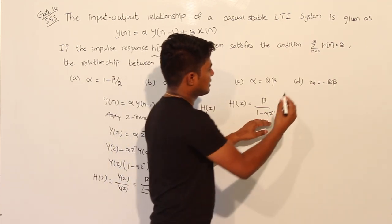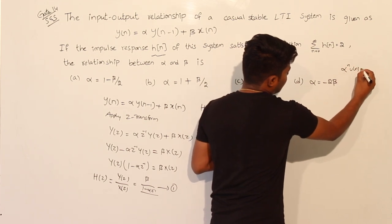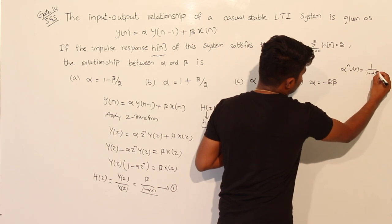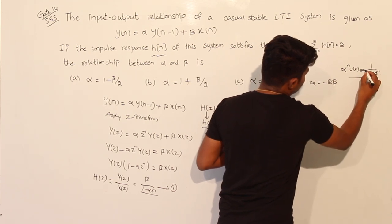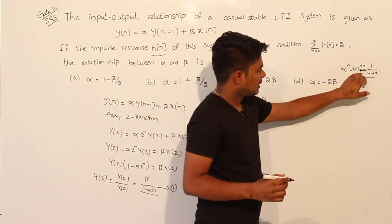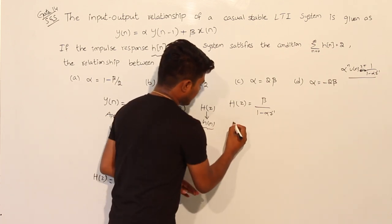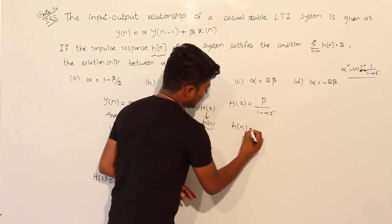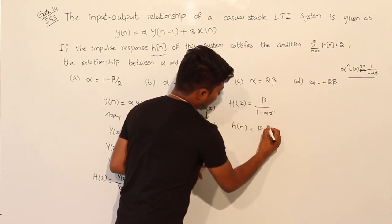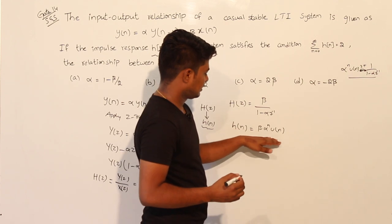This equation follows the Z-transform pair: α^n·u(n) ↔ 1 / (1 - α·z⁻¹). Applying the inverse Z-transform: h(n) = β · α^n · u(n).